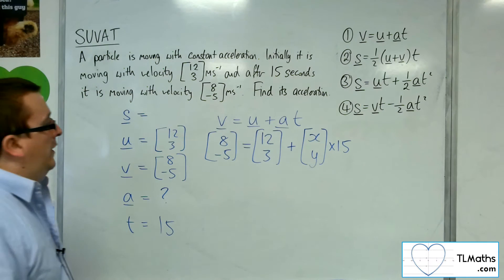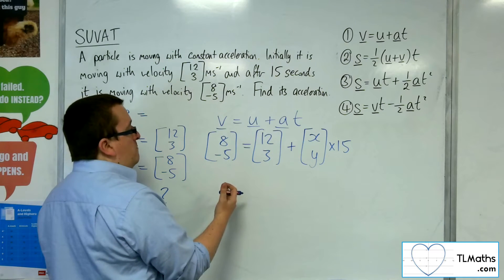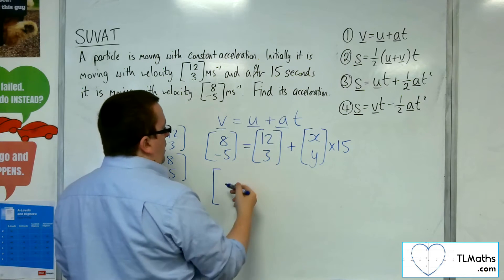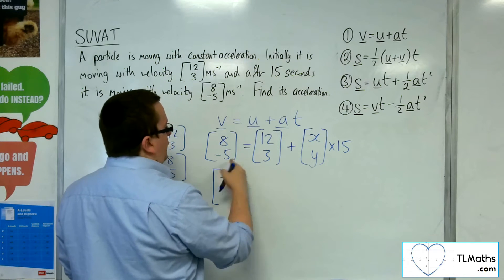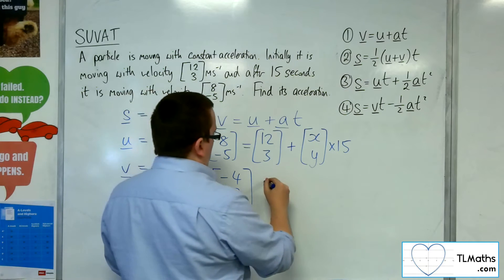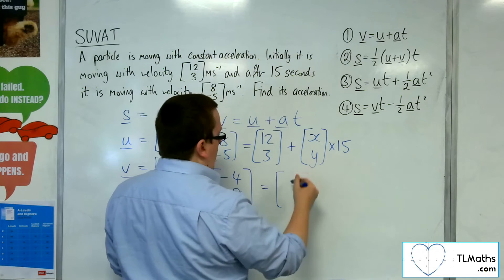Okay, so, what I can do is if I subtract the 12, 3 from both sides, then 8 take away 12 is minus 4. Minus 5 take away 3 is minus 8.